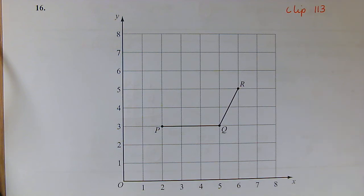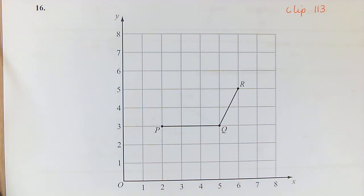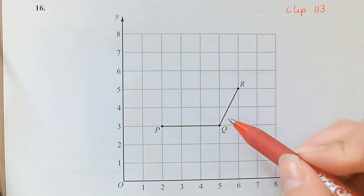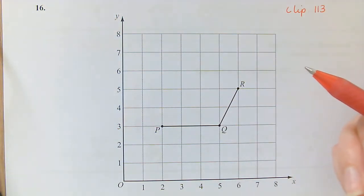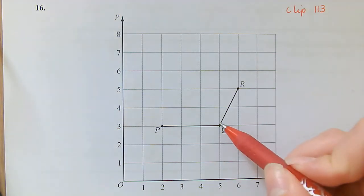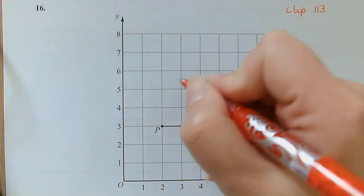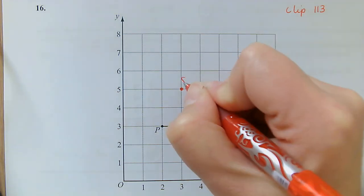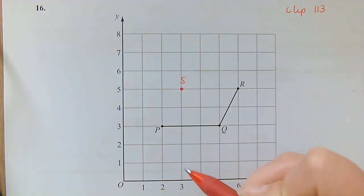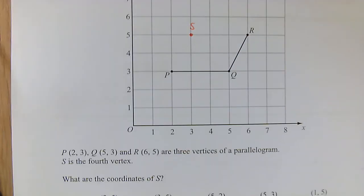Question 16: We've got some coordinates and we're told that they are three vertices of a parallelogram. We need to find the final coordinate for the fourth vertex. So if we look here in our parallelogram, we've got two pairs of parallel lines. So here is QR, so that means that QS must be parallel. S must be here, so that is the coordinate 3, 5, which is B.